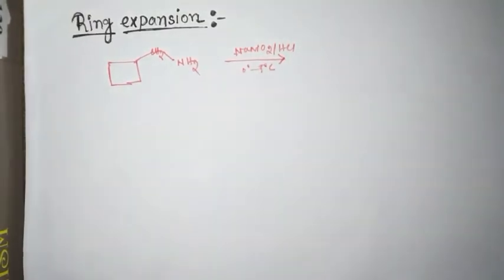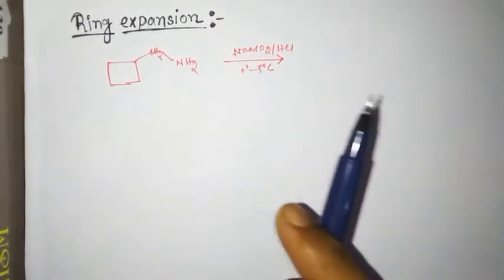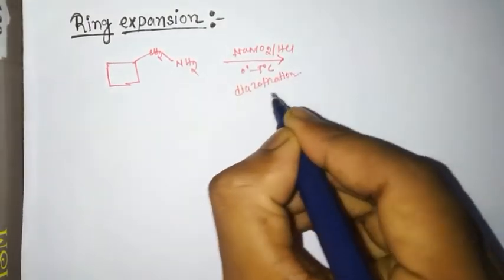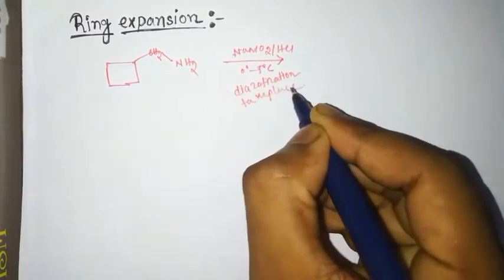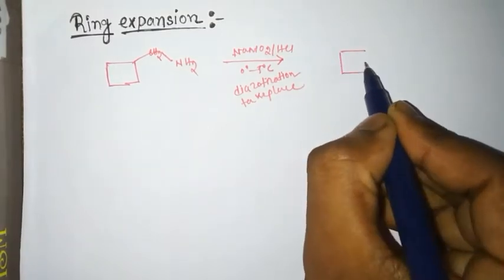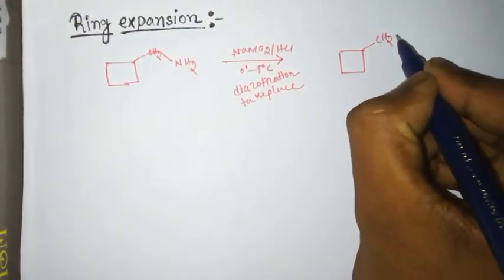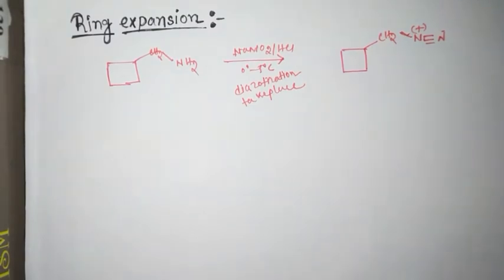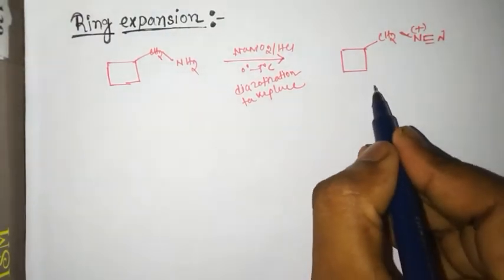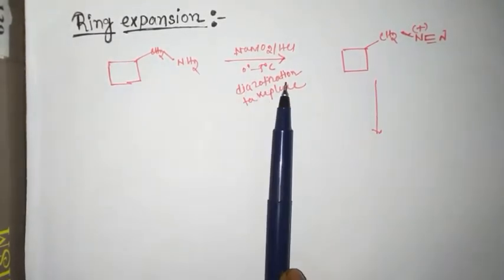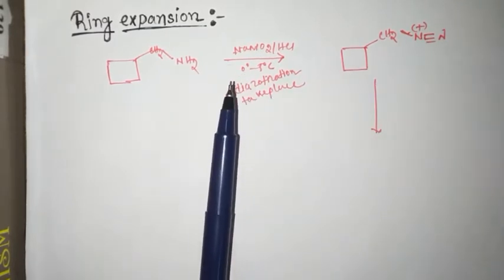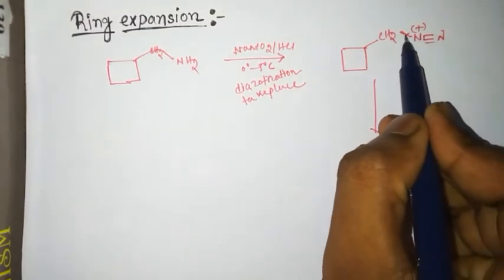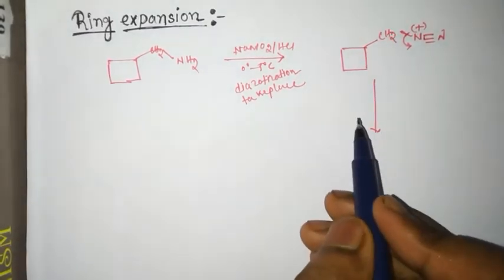In the first step, diazotization takes place. If you have any doubt about diazotization mechanism, you can watch my diazotization video I already made. Then in the next step, this single bond breaks and carbocation is formed.